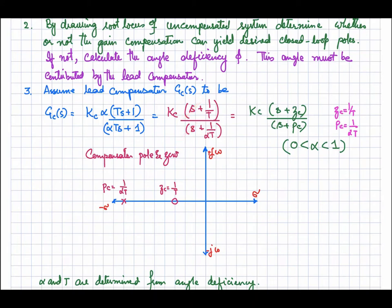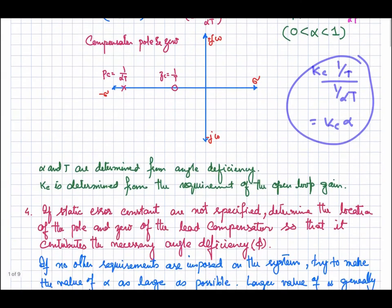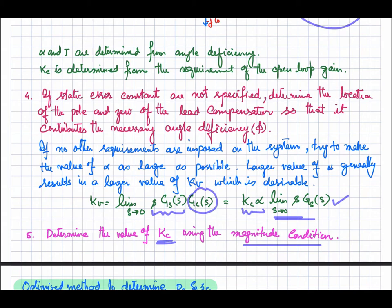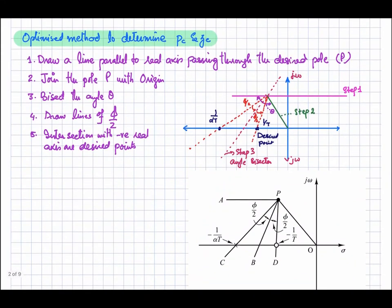The fifth and final step is to determine the value of Kc using the magnitude condition. These are the steps to design the lead compensator. Now, how can we determine the position of the pole and zero? There are two commonly used methods — there are infinitely many solutions, and you can select the position of the zero and pole such that the required specifications are met.